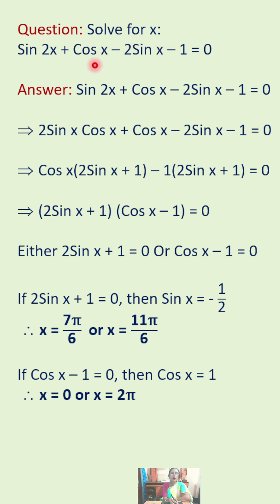Solve for x: sin 2x plus cos x minus 2 sin x minus 1 equals 0. Since the domain is not specified, we have to give every value of x which satisfies this equation from all the four quadrants.